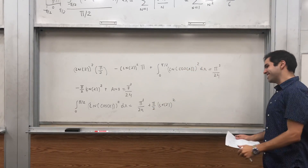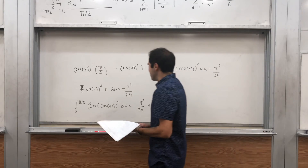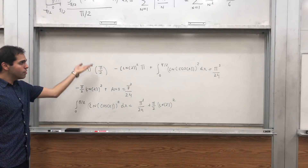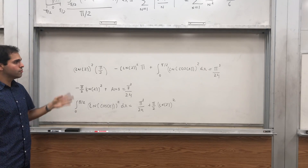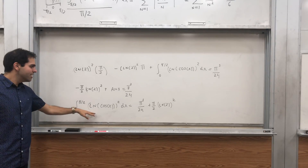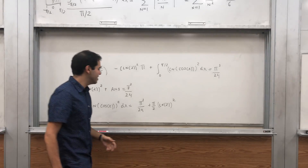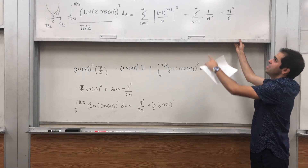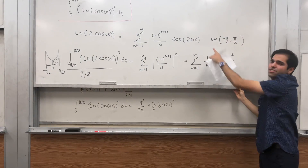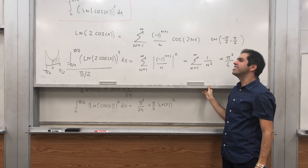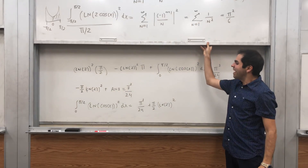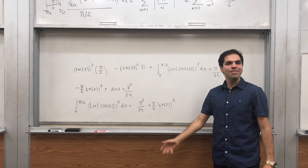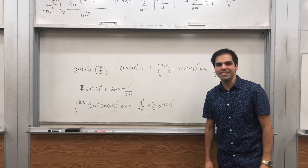Oh my god, this is really cool! Even though ln(sin(x)) was not that bad to integrate, even though this has a square it's also not too bad. We get this beautiful formula which rests on this beautiful Fourier series expansion — I invite you to watch that video, it's also amazing. If you like this and want to see more math, please make sure to subscribe to my channel. Thank you very much.